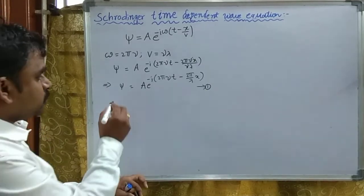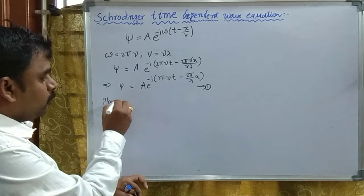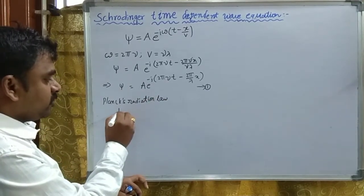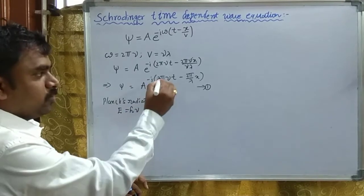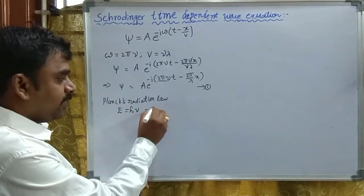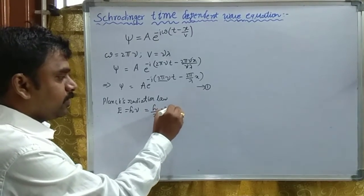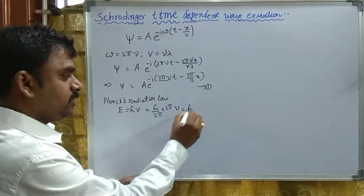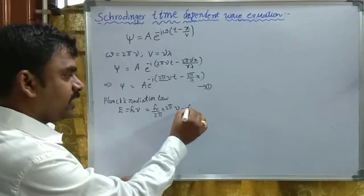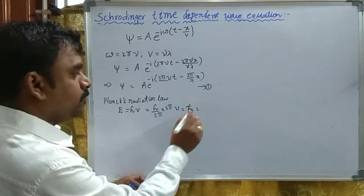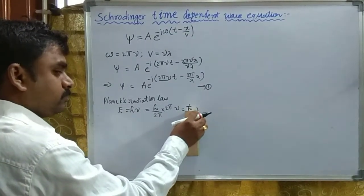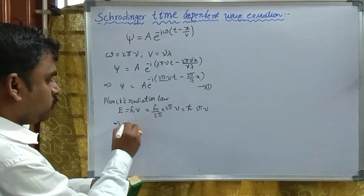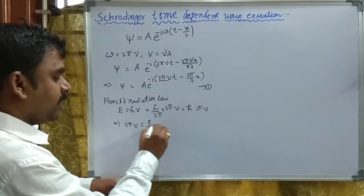Now I want to express this in terms of energy and momentum. According to Planck's radiation law, E equals to h·nu. We want 2·pi·nu, so I multiply and divide by 2·pi, giving E equals to (h/2·pi)·(2·pi·nu), that is h-bar·(2·pi·nu). Therefore, 2·pi·nu equals E/h-bar. This is equation number two.